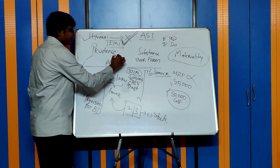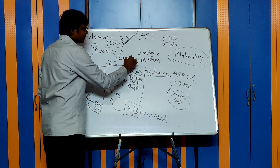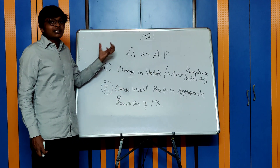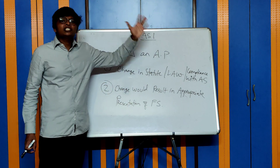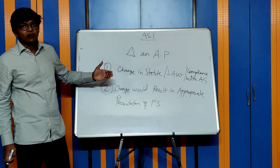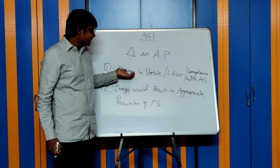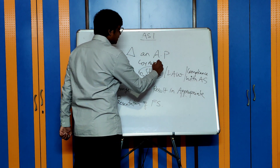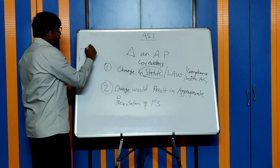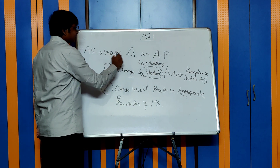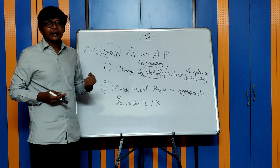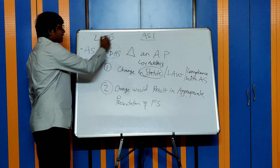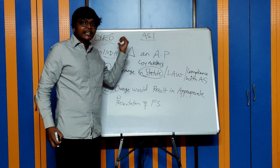Next, can I change my accounting policy? For example, if I chose SLM in year 1, can I shift to WDV in year 2? An accounting policy can be changed only in two cases. First, you can change an accounting policy when there is a change in statute or law, or for better compliance with an accounting standard. For example, if the Companies Act 2013 now requires your company to follow Ind AS instead of accounting standards, you may have to change your accounting policy. Similarly, since LIFO is not allowed as an accounting policy, you would have to change from LIFO to other methods.